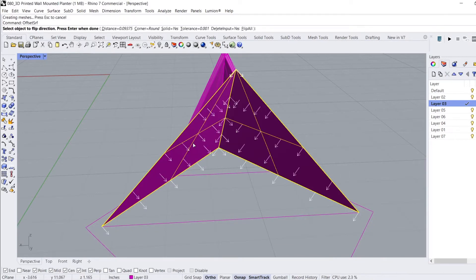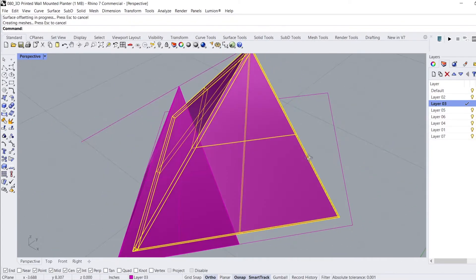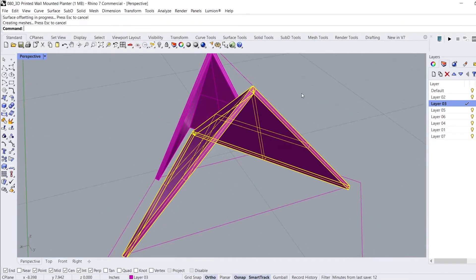After joining the surfaces together, I use the Offset Surface command and thicken the surfaces to roughly 1 eighth of an inch so it's rigid enough to hold wet soil and not leak.